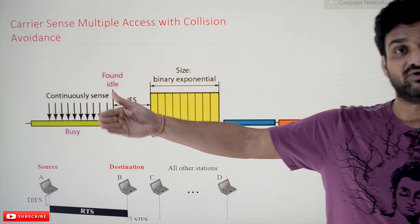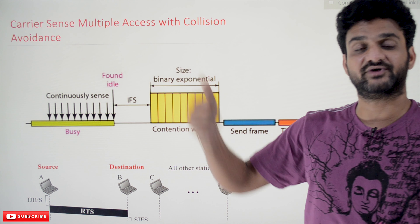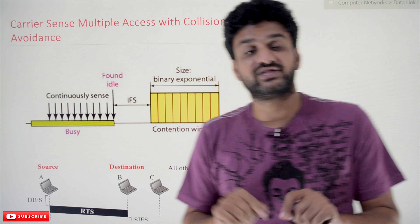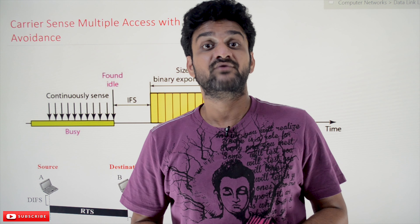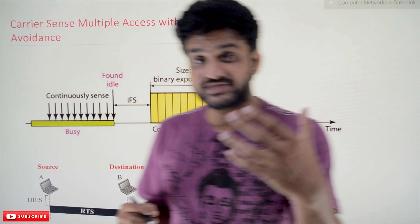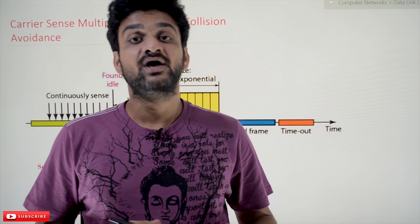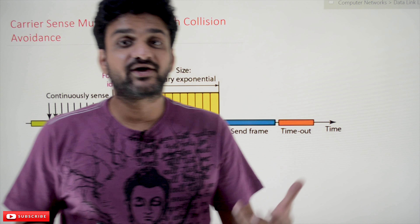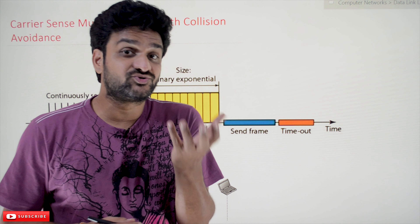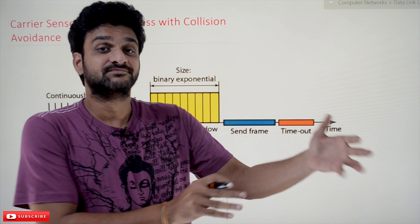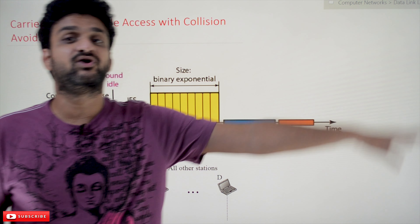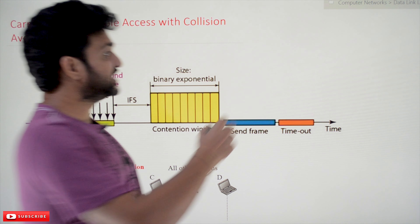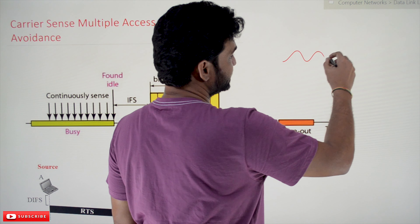CSMA/CA is used for collision avoidance and it is used in wireless networks, whereas collision detection is used in wired networks. Collision detection cannot be used with wireless networks because of attenuation. Attenuation means it is the reduction of the strength of the signal during transmission. As the signal gets transmitted over a distance, the signal strength gets reduced.